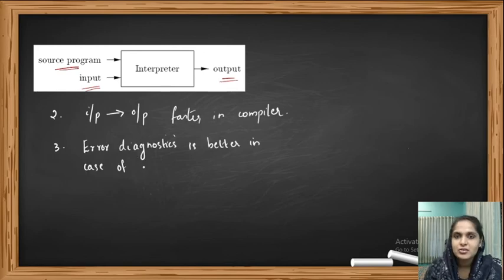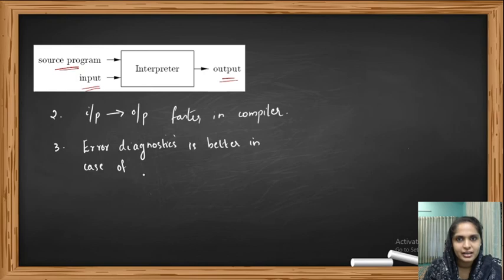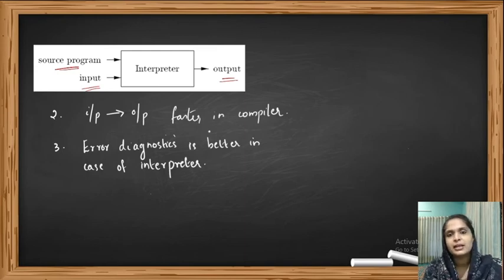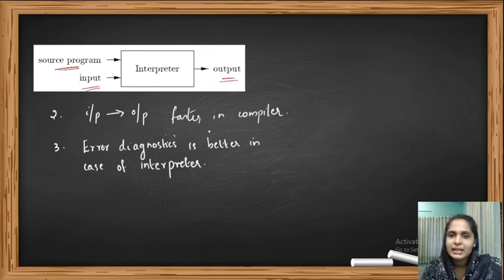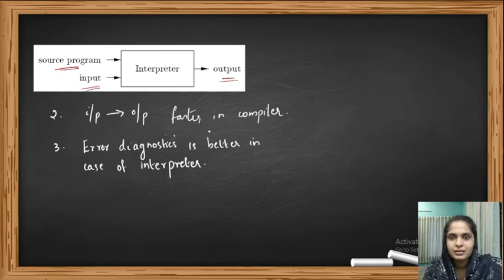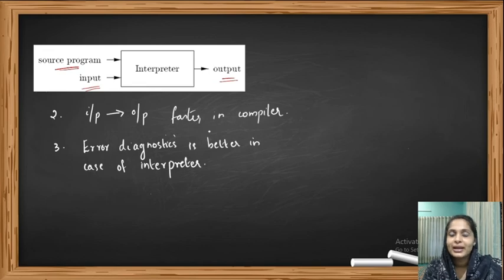The third difference: error diagnostics are better in the case of an interpreter. The interpreter executes the source program statement by statement, so it is easier to find errors — for example, the line number is given in the error message. When compiling, errors may appear as a segmentation fault or core dump, making it difficult to identify the exact location. But with an interpreter, execution proceeds until the point of error. Suppose the error is at line 15 — the interpreter works without errors until line 14, and at line 15 the error is shown, making it easy to identify the location.